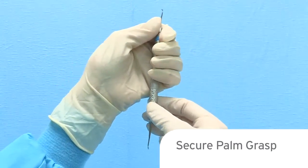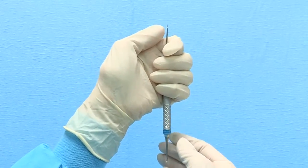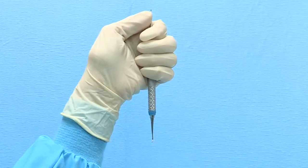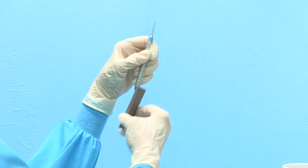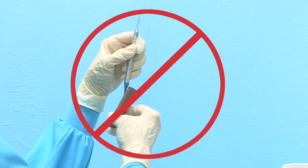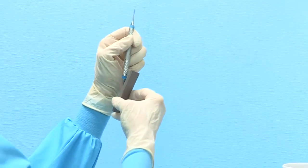When sharpening, a secure palm grasp with the instrument held in the palm of the hand and the thumb near the top shank is necessary to counterbalance the pressure from the sharpening stone. When the pressure from the stone is not counterbalanced, the instrument can slip out of position. This will cause the sharpening angles to be incorrect and can result in an instrument that does not have sharp cutting edges.